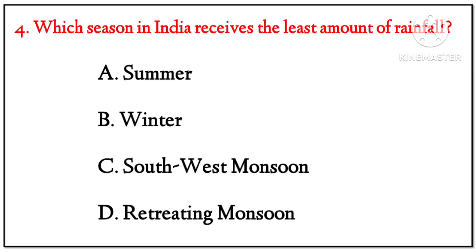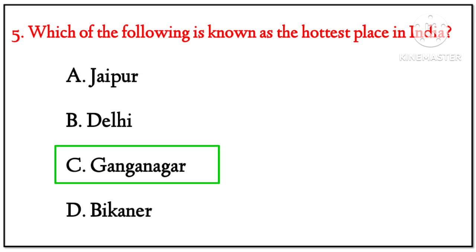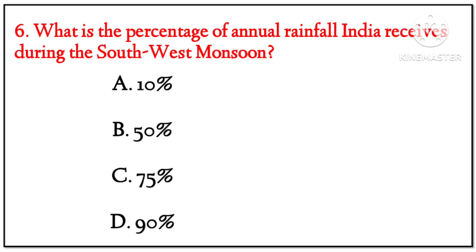(4) Which season in India receives the least amount of rainfall? Options: Summer, Winter, Southwest Monsoon, Retreating Monsoon. Answer: Winter. (5) Which is the hottest place in India? Options: Jaipur, Delhi, Ganganagar, Bikaner. Answer: Ganganagar — 52 degrees Celsius.